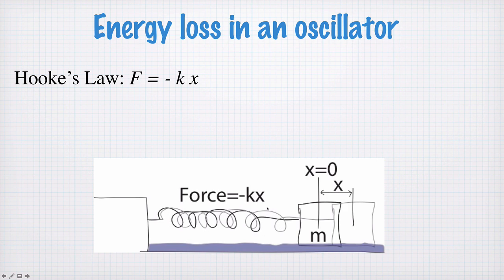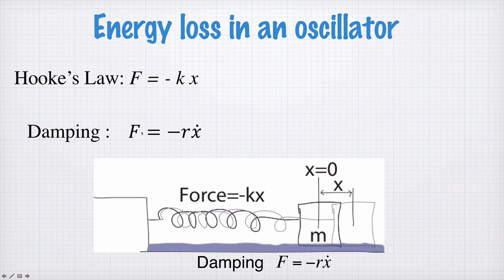So as before, the restoring force, due to the spring, is given by Hooke's Law. So force is equal to negative k times x. But now we're going to add this damping force. This damping force, F, is given by some constant r, so it depends on how viscous your fluid is, how much resistance there is to the motion. But the force is proportional to the negative of the velocity of the mass.